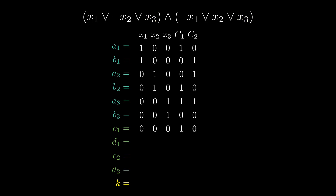The values of the integers c_i and d_i are equal. For both integers, all digits are set to 0, except for the digit that corresponds to clause C_i. Finally, all digits of k that correspond to the variables are set to 1, and all digits of k that correspond to the clauses are set to 3.